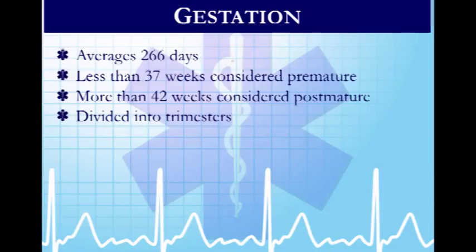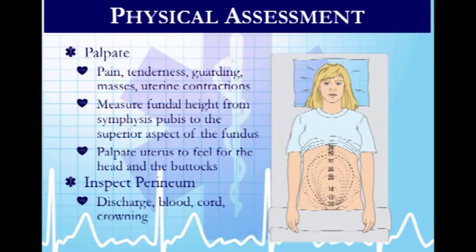A couple of key numbers for pregnant ladies: gestation averages about 266 days for a human female. By definition, premature infants are less than 37 weeks, and post-mature infants have been in for 42 weeks or longer. Pregnancies are divided into trimesters.